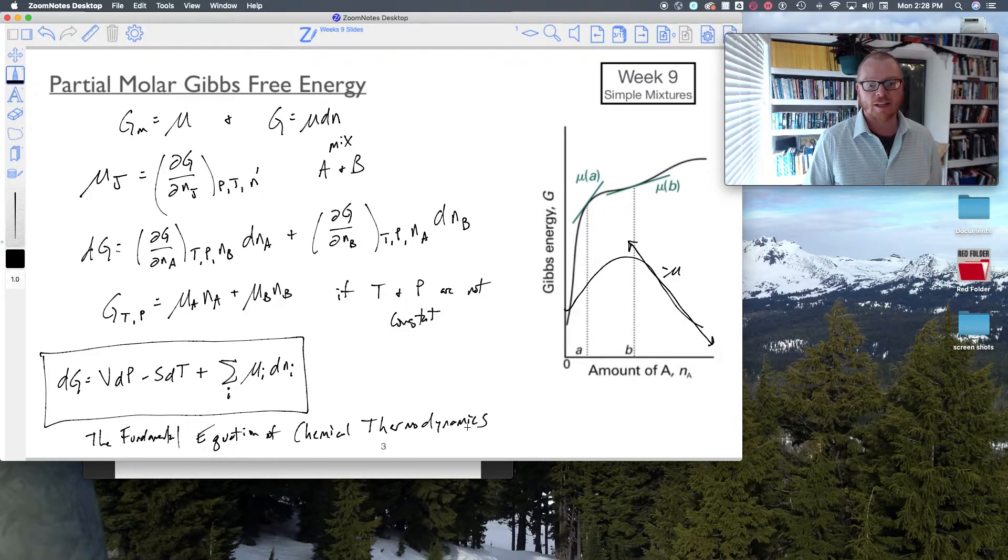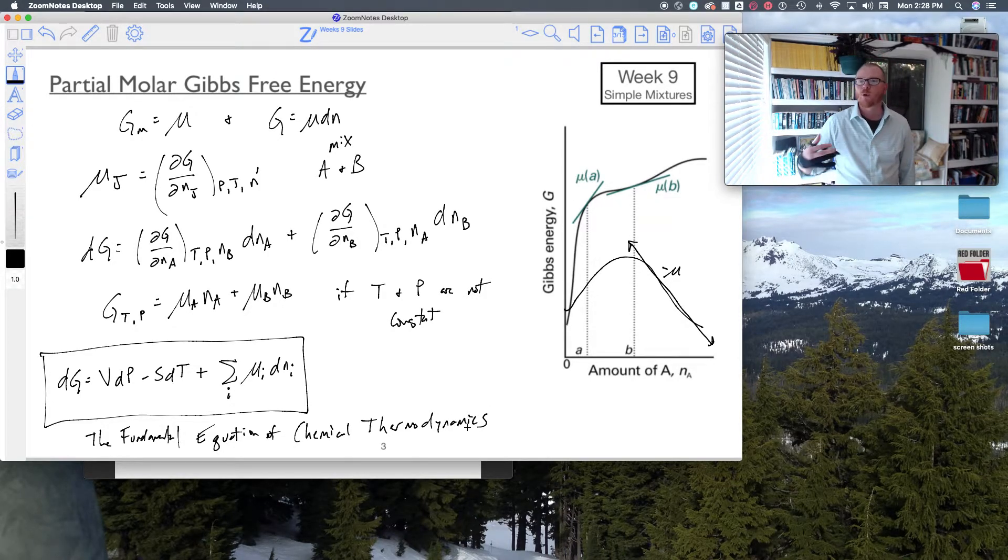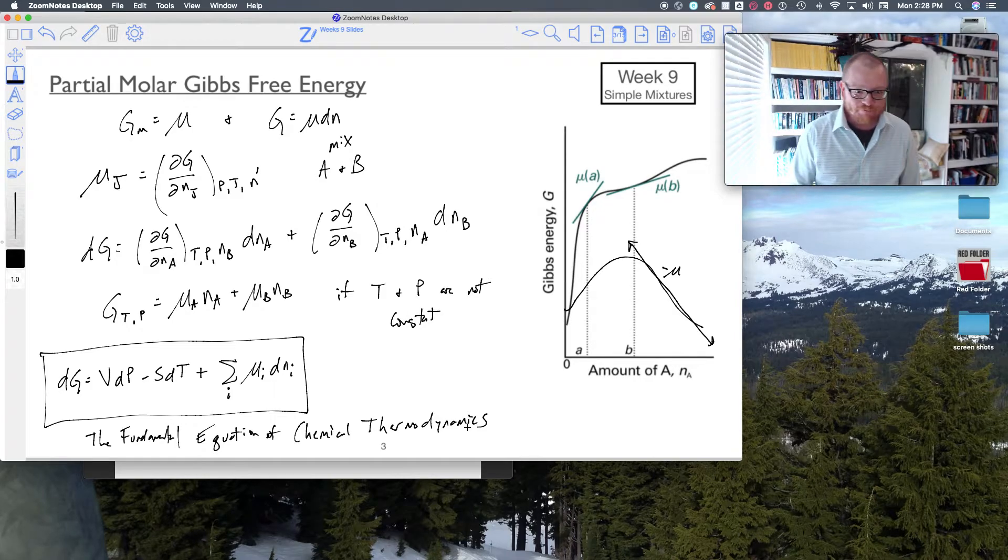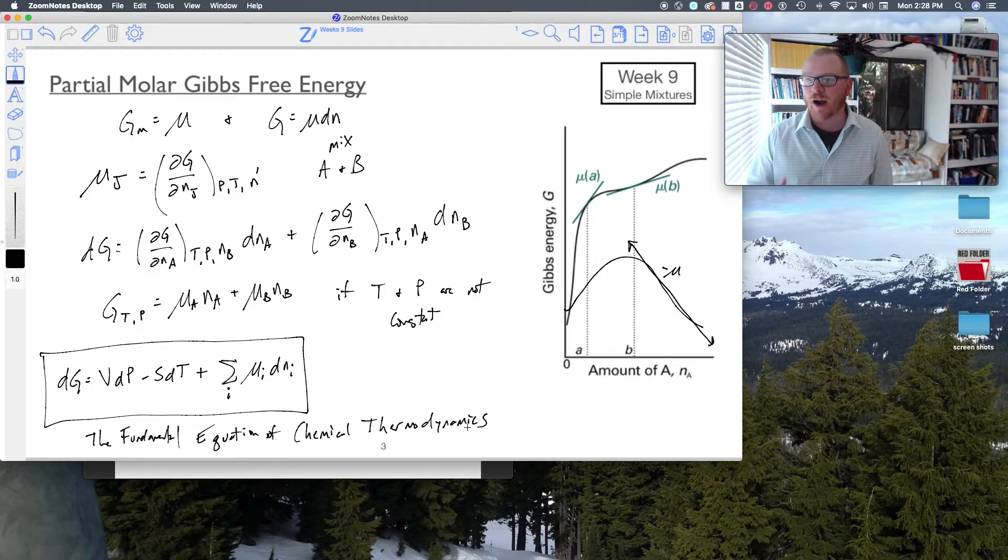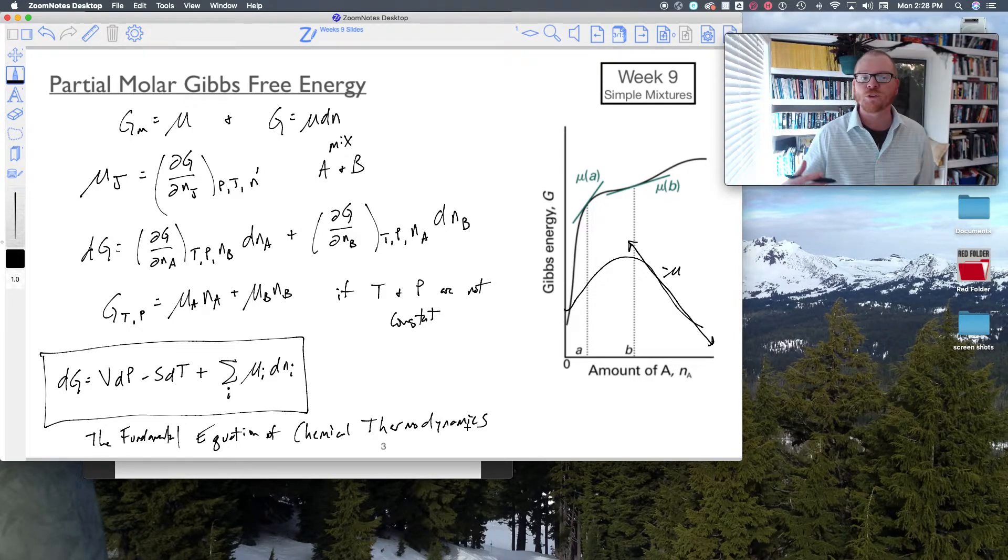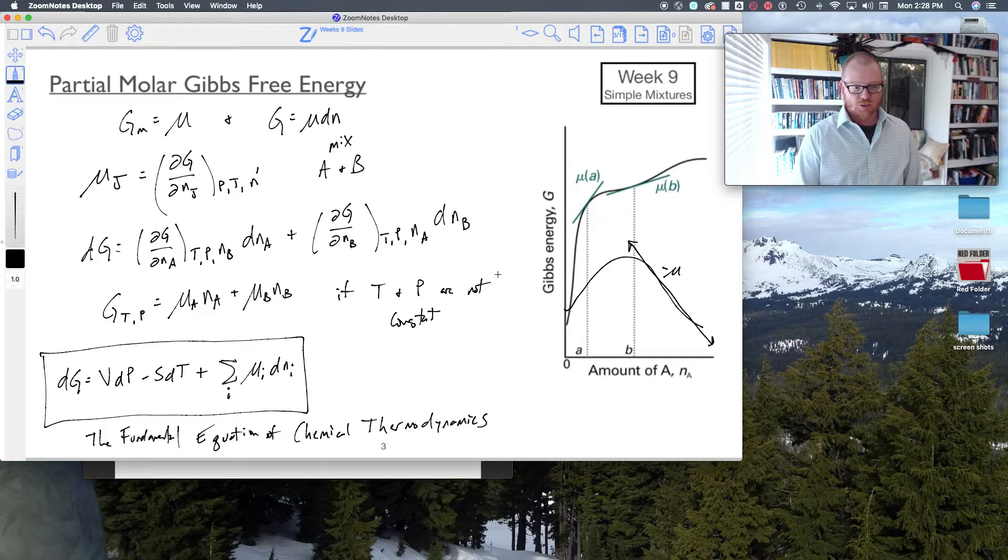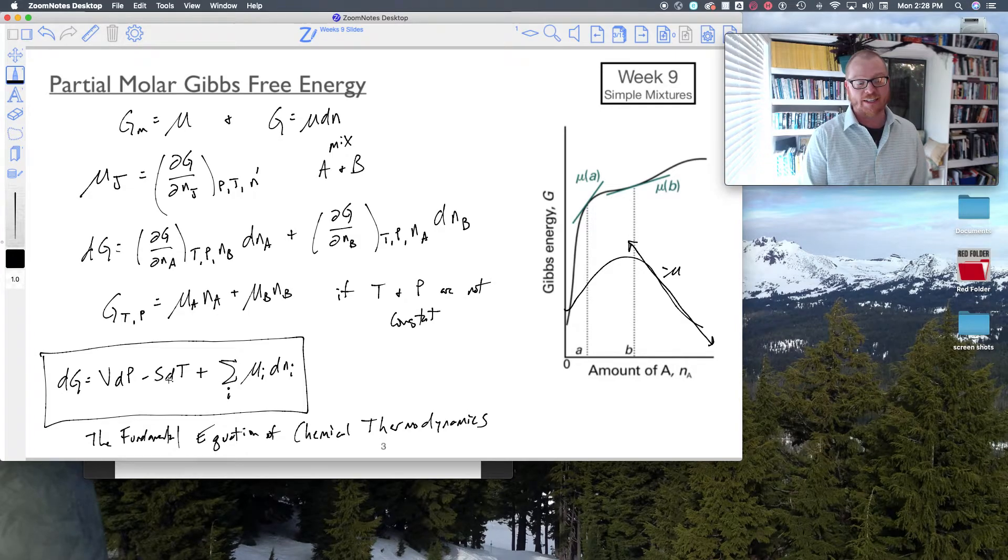Because there's just not a whole lot of chemistry we can do if we're not accounting for how the number of moles changes. So up to now, we were playing with this equation, dG equals VdP minus SdT, and that created our basis for phase equilibria.